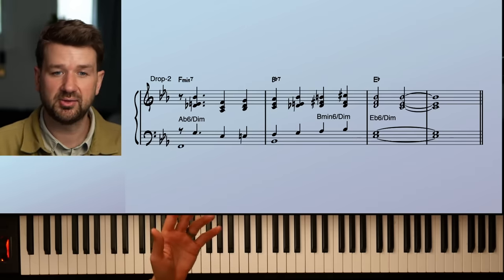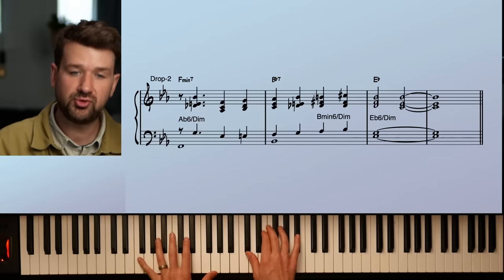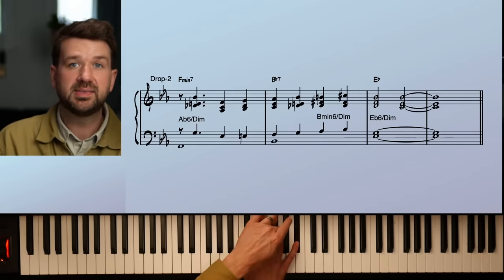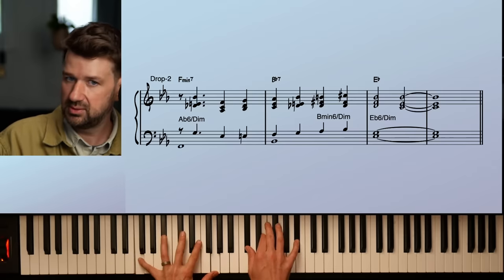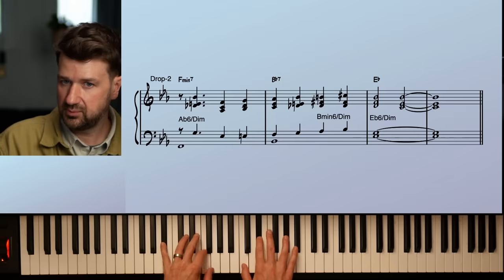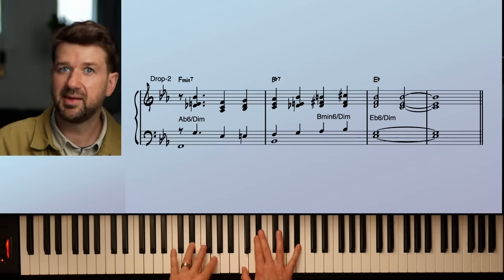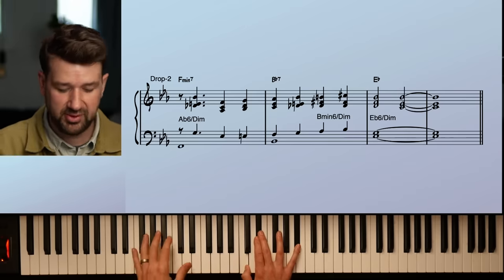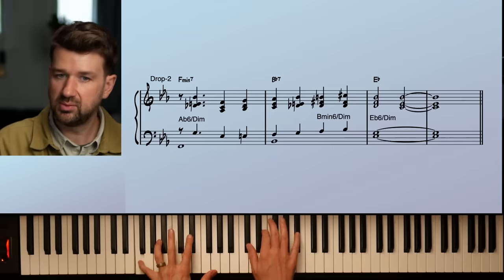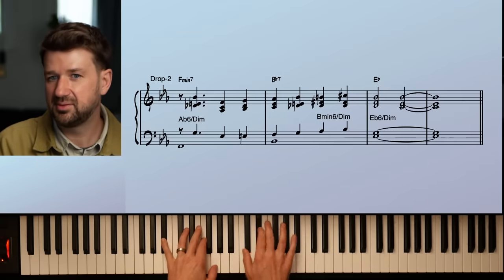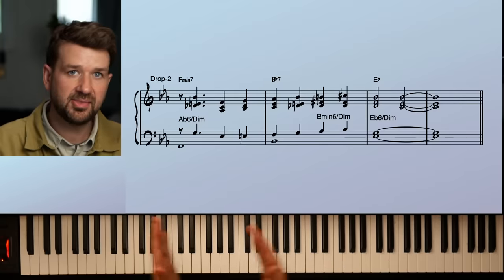The same passage bars nine through 12 with the same six diminished scales that we're using. We're still starting on the diminished here, but we're going to use a drop two structure. So instead of the closed voicings, we're going to take the second from the top note of each one of those closed voicings, and we're going to put it in the left hand, an octave lower. Again, that sounds amazing. It's a whole other sound though. Here's the closed. Here's the drop two.